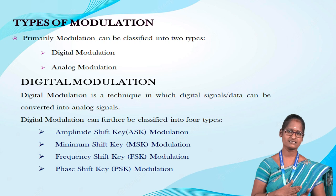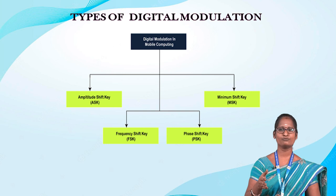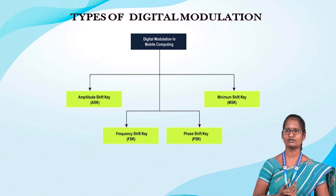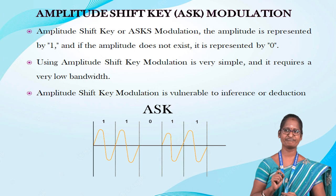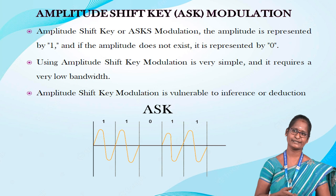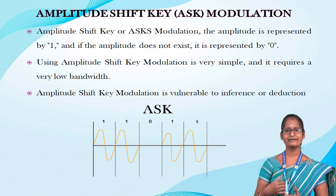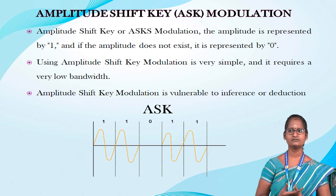In the diagram the types are explained: amplitude modulation, minimum shift key modulation, frequency shift key modulation, and phase shift key modulation. In Amplitude Shift Key or ASK modulation, the amplitude is represented by one, and if the amplitude does not exist it is replaced by zero. Using amplitude shift key modulation is very simple and it requires very low bandwidth. Amplitude shift key modulation is vulnerable to inference and detection.